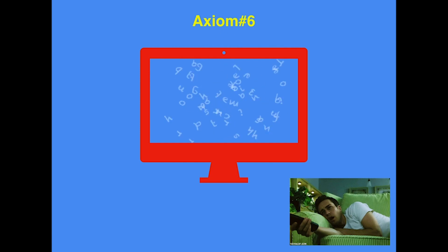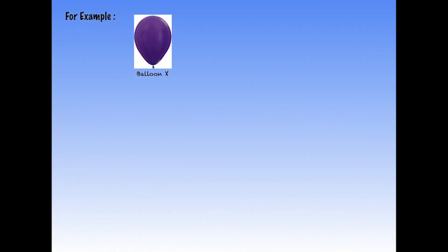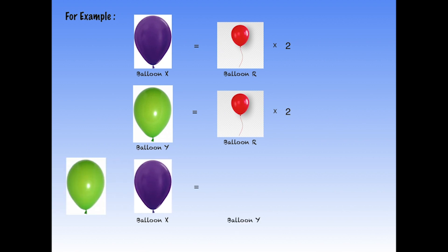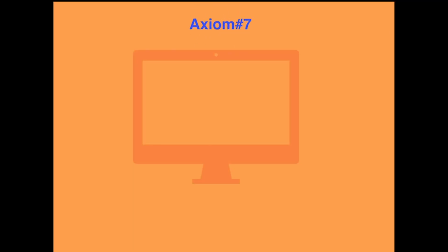The next axiom states: things which are double of the same thing are equal to one another. From the figures, balloon X is twice the size of balloon R, and balloon Y is also twice the size of balloon R. So balloon X equals balloon Y — both are twice the size of balloon R, and hence they are equal to each other.